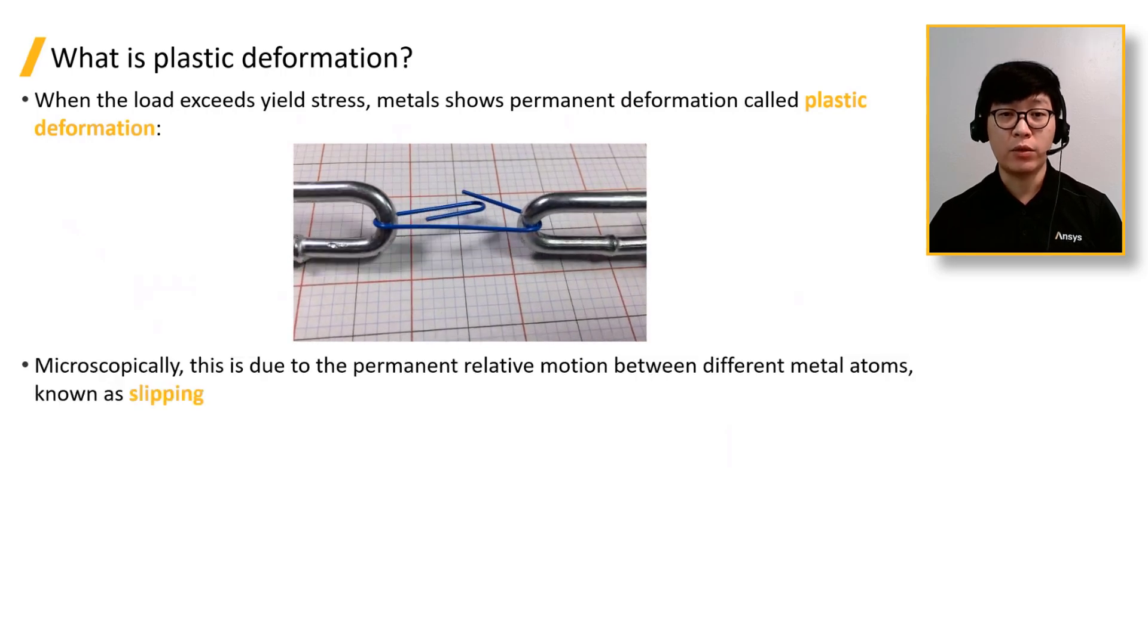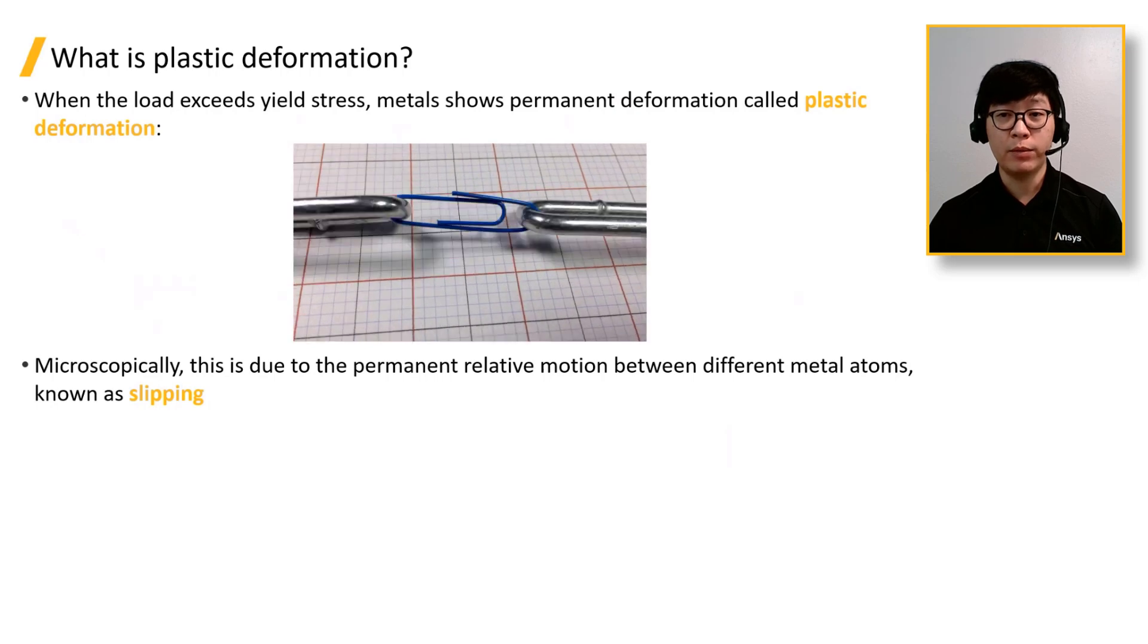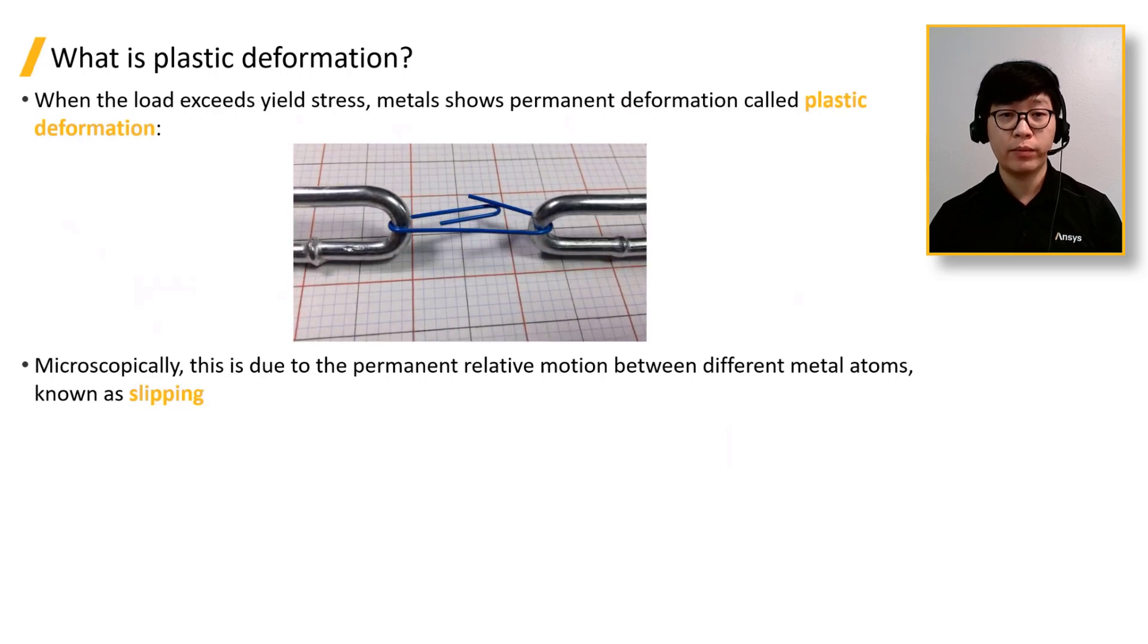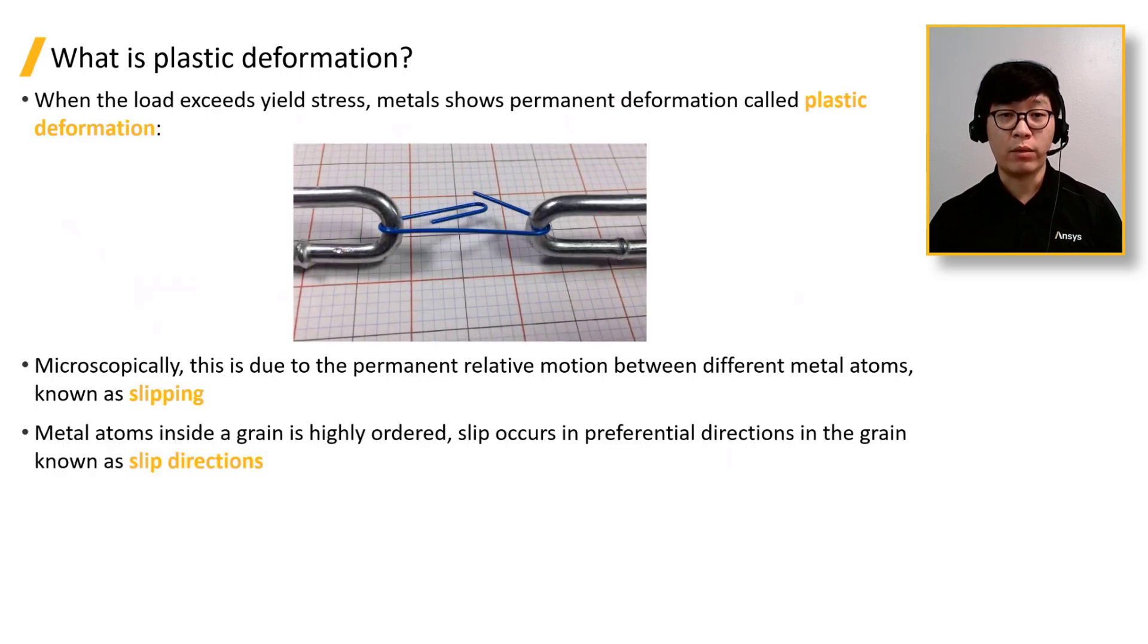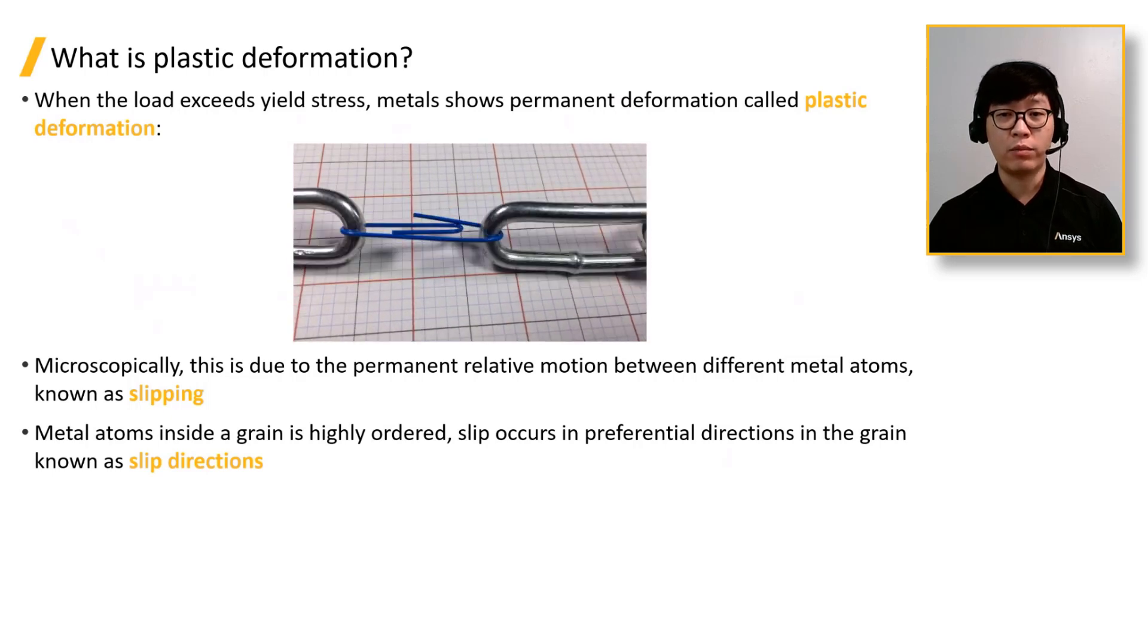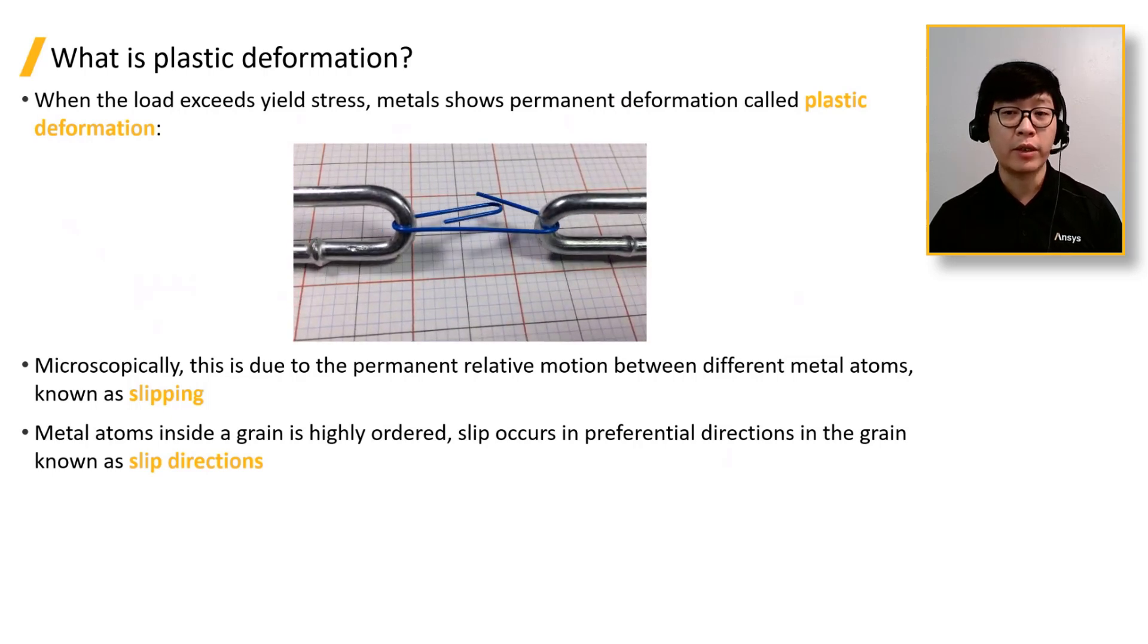Microscopically, this is due to the permanent relative motion between different metal atoms, known as slipping. Metal atoms inside a grain is highly ordered, and slip occurs in preferential directions in the grain, known as slip directions.